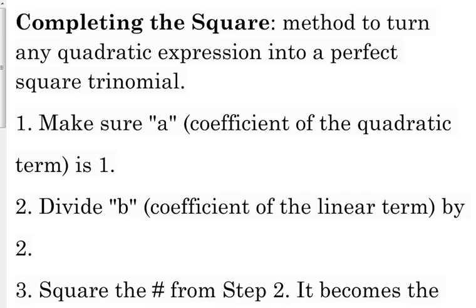Completing the square is a method used to turn any quadratic expression into a perfect square trinomial. When we were talking about factoring, remember we had that special case of a perfect square trinomial. It was the one that factored, and you got the exact same factors. So we wrote it as that squared. That's the key to this process right here. So number one is we've got to make sure a, the coefficient of the quadratic term, the x squared term, is 1.